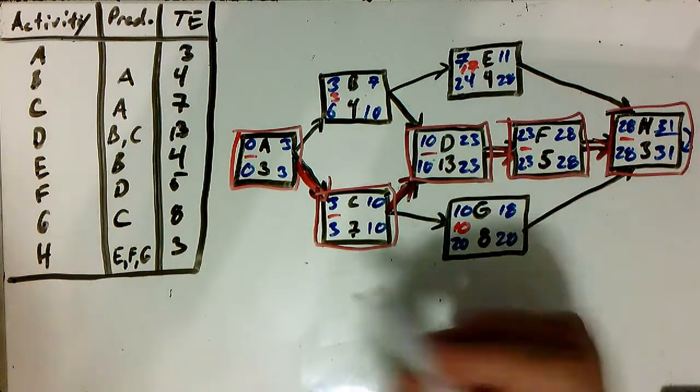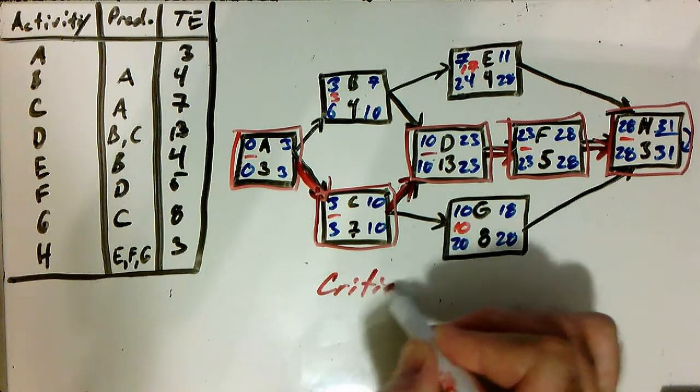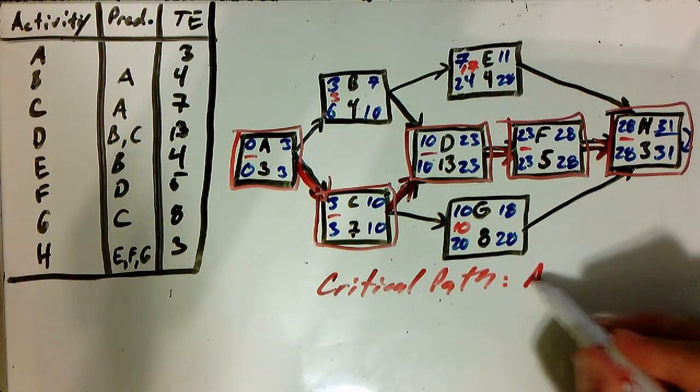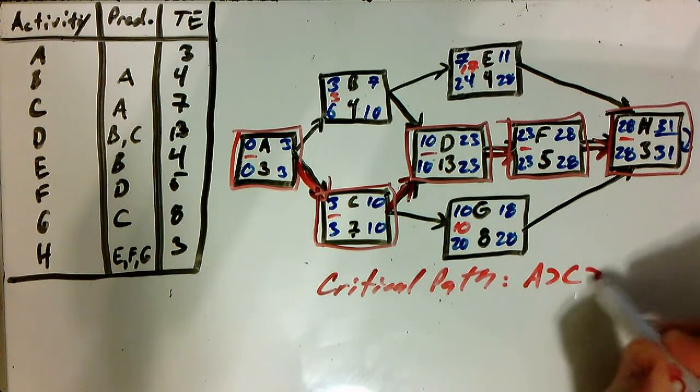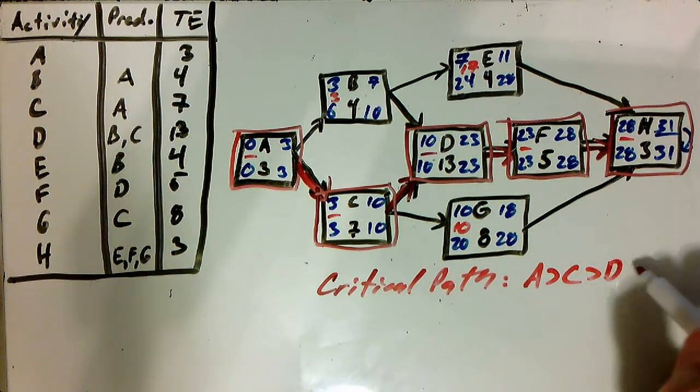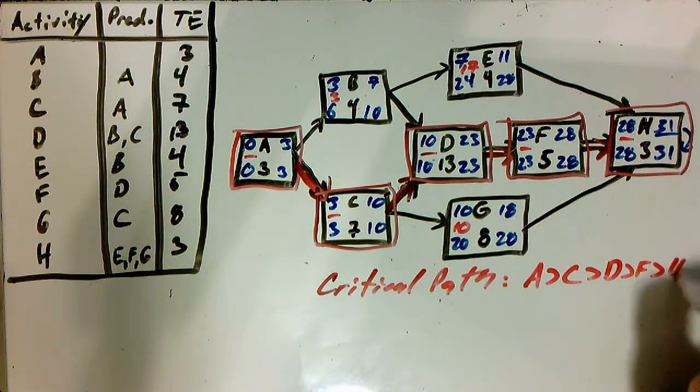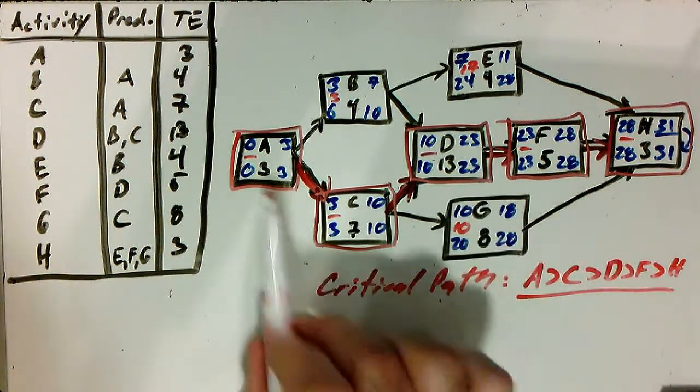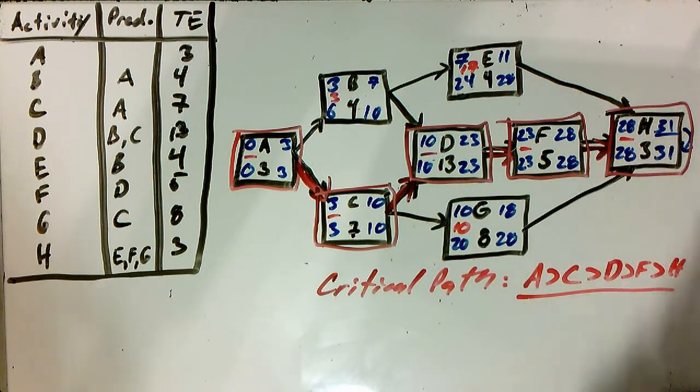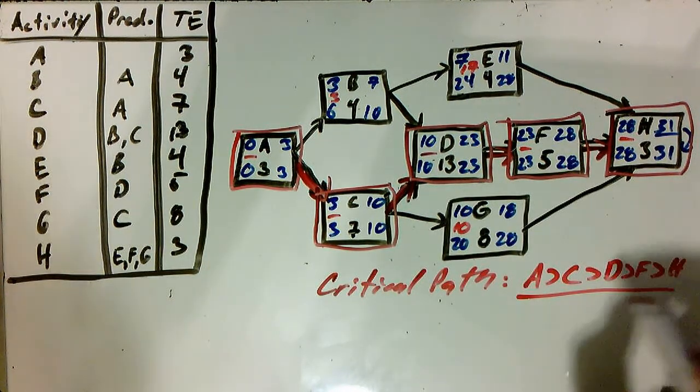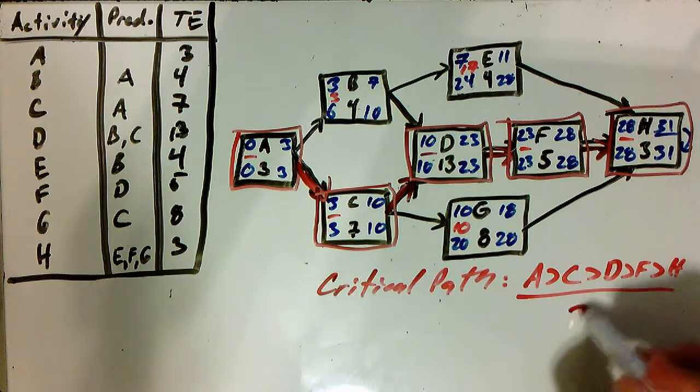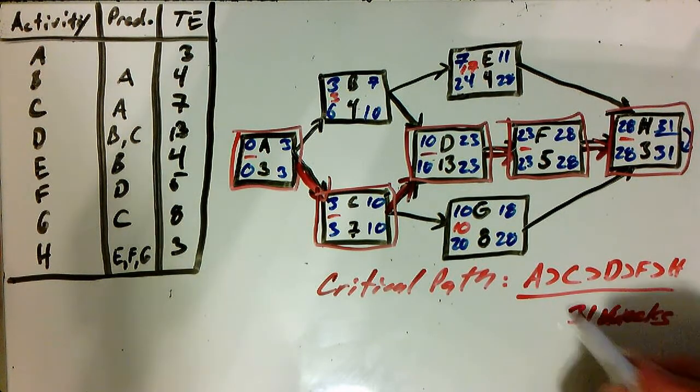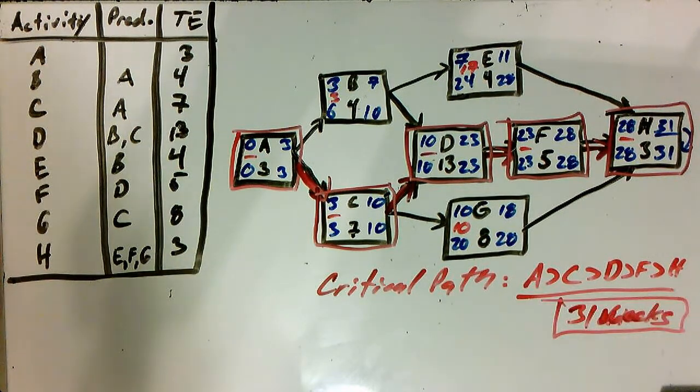So if we highlight those, our critical path is the following. It's activity A, to C, to D, to F, and to H. And if we add up all those values, three plus seven plus thirteen plus five plus three, as far as durations, that gives us the value of 31 days. Or, sorry, these are weeks. Thirty-one weeks. So that's our first estimate on our critical path.